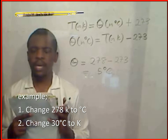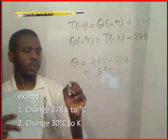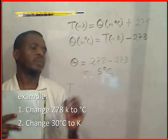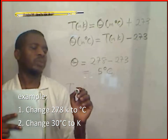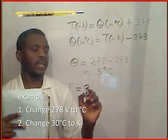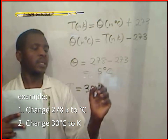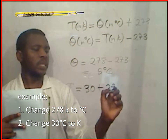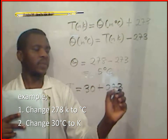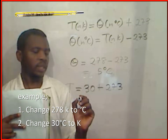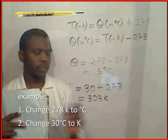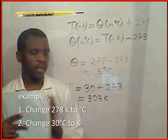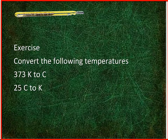Change 30 degrees centigrade to Kelvin. The temperature in Kelvin will be equal to 30 plus 273. This gives us 303 Kelvin.